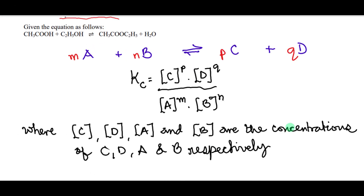The active mass of a substance is the concentration of the substance raised to the power of its stoichiometric value in the equation of the reaction.